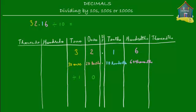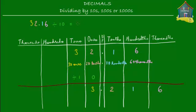Now it becomes easy to do the division. We divide each of these numbers — thirty ones, twenty tenths, ten hundredths, and sixty thousandths — by ten. Thirty ones divided by ten gives three ones, so the 3 moves to the ones place. Twenty tenths divided by ten gives two tenths, so the 2 moves to the tenths column. Ten hundredths divided by ten gives one hundredth, so the 1 goes to the hundredths column. Sixty thousandths divided by ten gives six thousandths, so the 6 moves to the thousandths column. So 32.16 divided by 10 gives you 3.216.